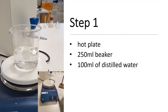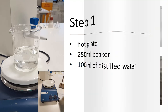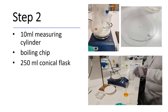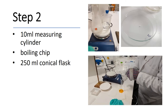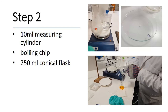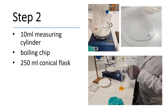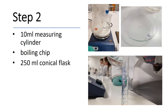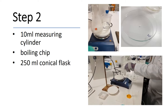Step 1. Turn on the hot plate and in a 250ml beaker, boil 100ml of distilled water. Using a 10ml measuring cylinder, measure out 10ml of boiling water. Take this water and a boiling chip, add it to a 250ml conical flask and put on the heat to boil.